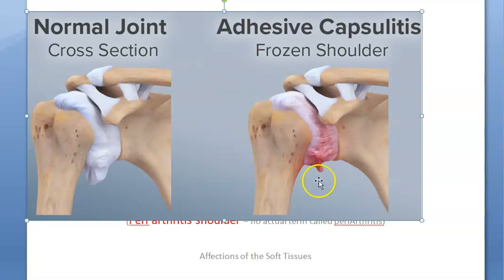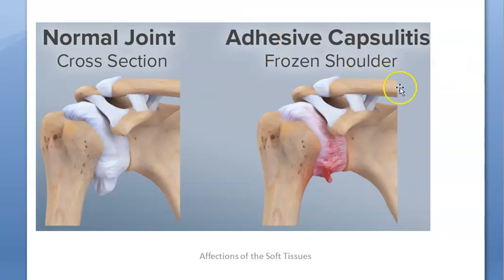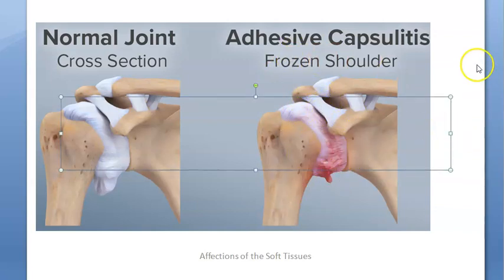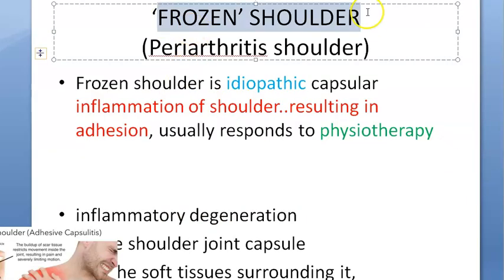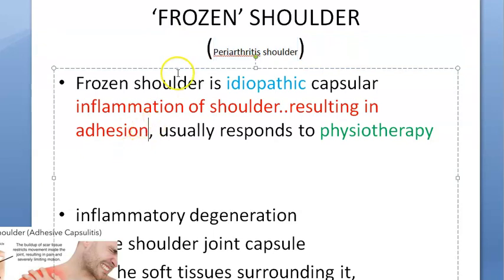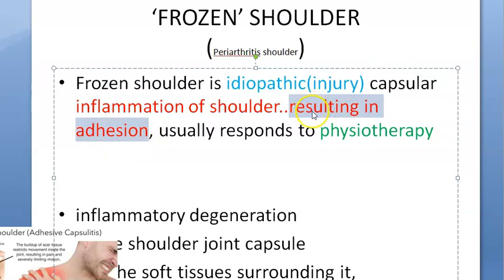The soft tissue is affected - this condition is given in the chapter on affections of soft tissue. What has happened is the joint capsule is inflamed, and this leads to adhesion - hence the name adhesive capsulitis. Frozen shoulder is also called periarthritis shoulder, which is terminology they say should not be used. The cause is considered idiopathic, but now they think it happens because of injury or insult.